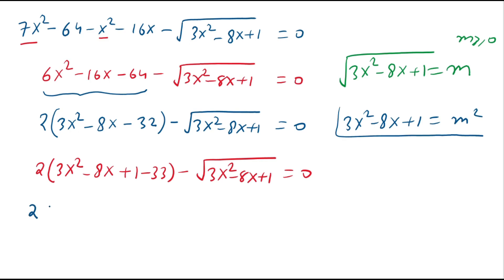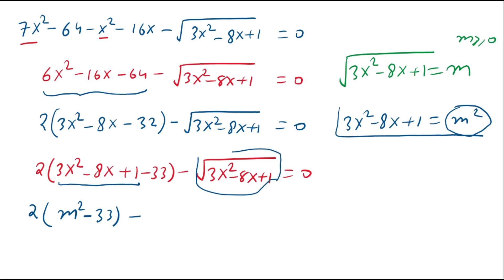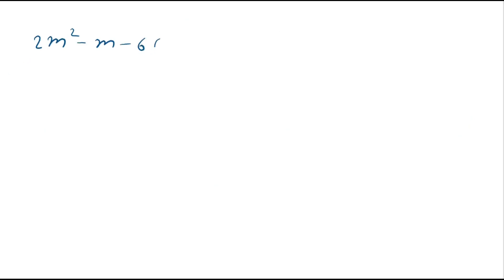Substituting, 2 times (m squared minus 33) minus m equals 0. Multiplying through: 2m squared minus m minus 66 equals 0. We apply middle term split: 2m squared minus 12m plus 11m minus 66 equals 0.